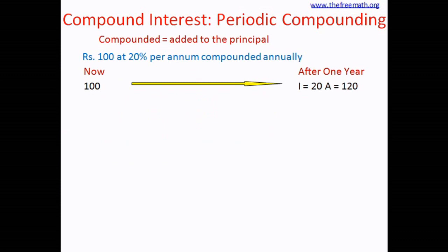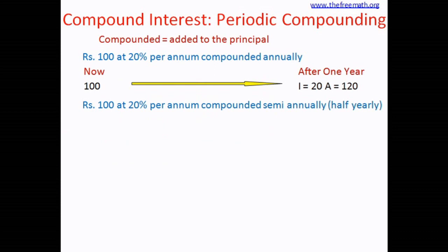Now what happens if the interest is compounded semi-annually, that means half-yearly? The principal is still 100 and the rate is still 20 percent — everything else is the same. The only thing that changes is the compounding period. We are going to calculate the interest every six months, so we need to split the rate into two parts: 20 percent split into two equals 10 percent each.